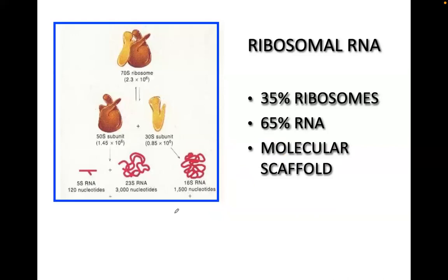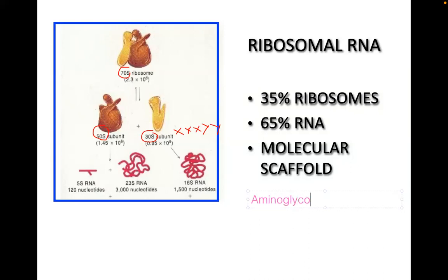The rRNA serves as a molecular scaffold — 65% is RNA, 35% is protein. We have three subunits: 70S, 50S, and 30S. The antibiotics that inhibit the 30S subunit are aminoglycosides and tetracyclines.